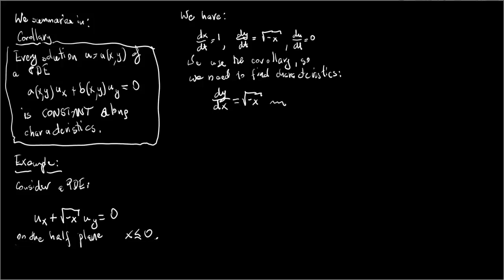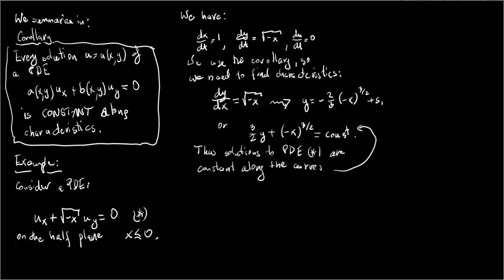Its general solution is 3 over 2 times y plus minus x to the power 3/2 equals constant S, with S being arbitrary constant. We can also write it in such a way that both independent variables are on the left hand side. And then the solution takes the form like this. Thus the solutions to the PDE star are constant along the curves which we just have found and which are just characteristics of the PDE.